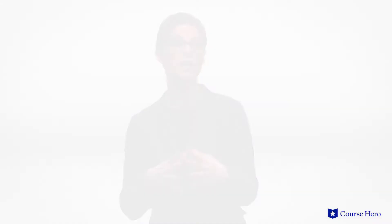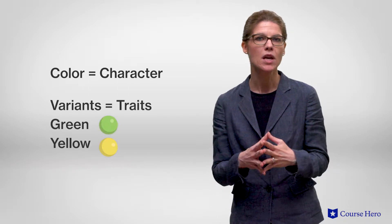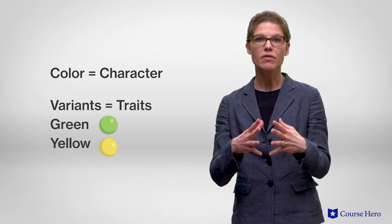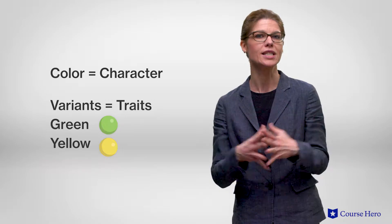Mendel probably chose to study garden peas because they were easy to grow and they came in many readily distinguishable varieties. For example, one variety had yellow peas and the other one had green ones. In this case, the color of the peas is called a character, whereas each of the variants — green and yellow — are the traits.